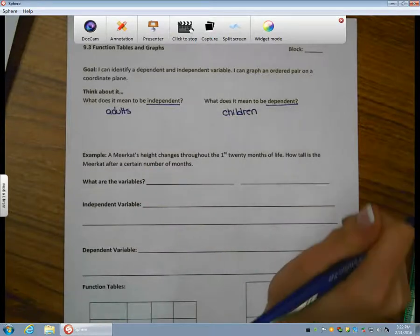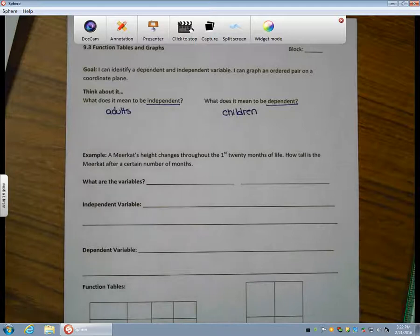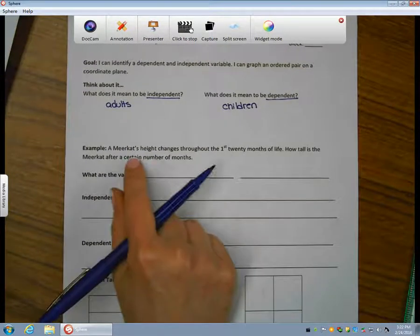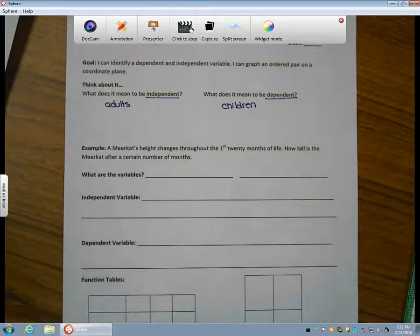Now that we've thought about that connection, let's look at how this can relate to our math. In this example, it says a meerkat's height changes throughout the first 20 months of life. How tall is the meerkat after a certain number of months?